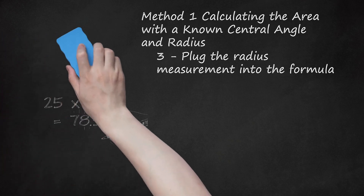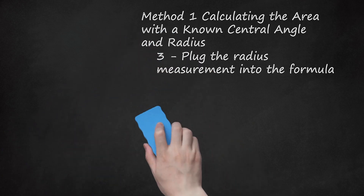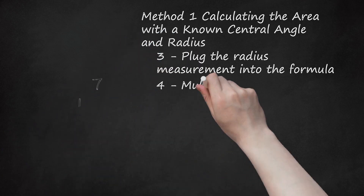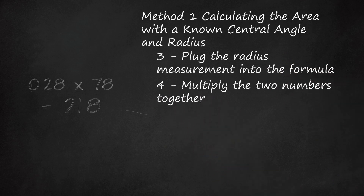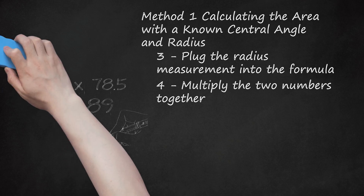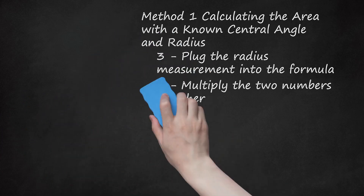If you don't know the length of the radius but you know the diameter, simply divide the diameter by 2 to find the radius. Step 4: Multiply the two numbers together. You will be multiplying the percent by the area of the whole circle. This gives you the area of the sector. For example, 0.28 times 78.5 is equal to 21.89. Since you are finding the area, the answer will be in square centimeters.